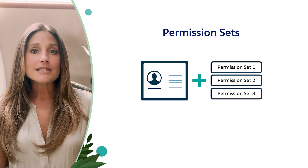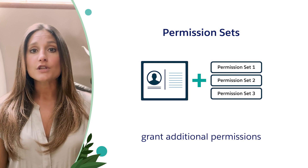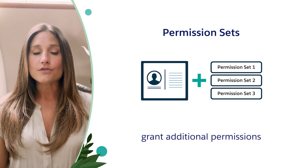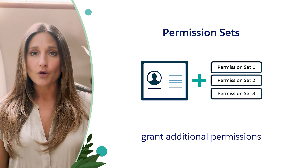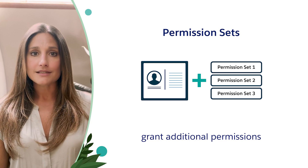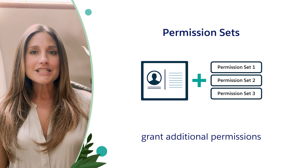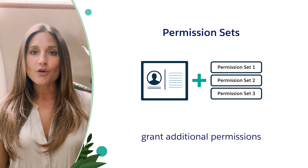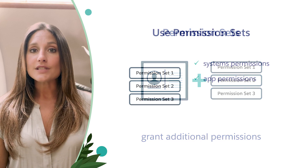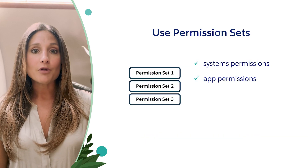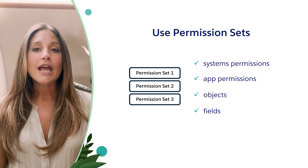Permission sets are used to grant additional permissions for specific users on top of their existing profile permissions. Permission sets can be used for most things controlled at the profile level, like access to system and app permissions and access to objects and fields.